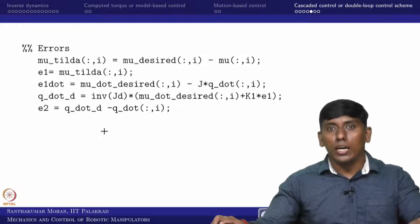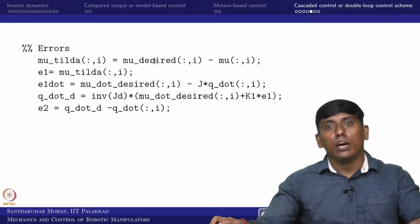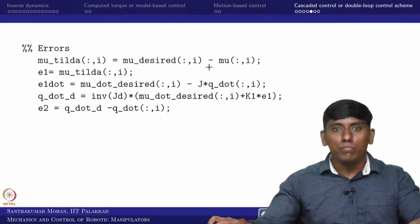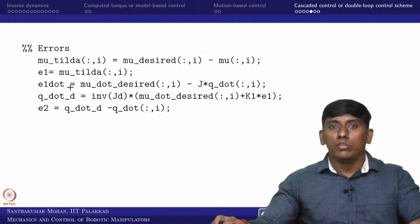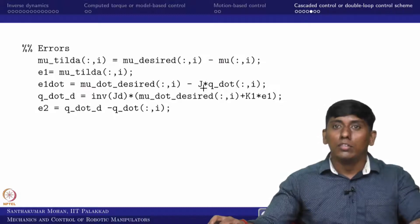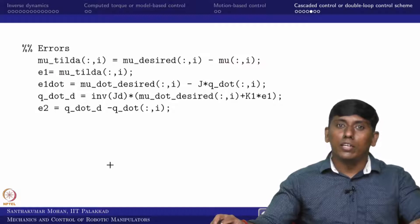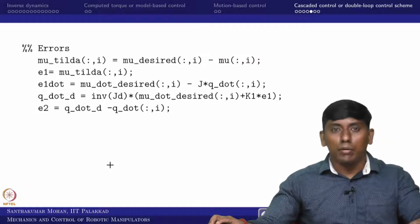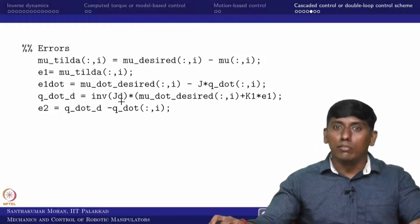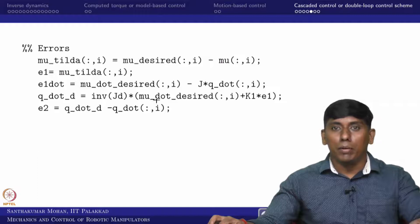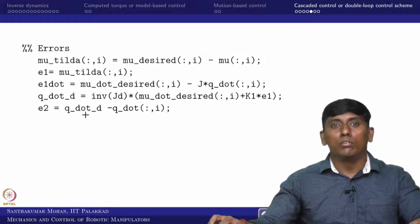Coming back to mu_tilde: mu_desired minus mu is written as e1, and e1_dot is mu_dot_desired minus mu_dot, where mu_dot equals J multiplied with q_dot. After that, q_dot_desired is derived based on the outer loop as inverse of J times (mu_dot_desired plus k1*e1). Based on that, e2 is calculated as q_dot_desired minus q_dot.